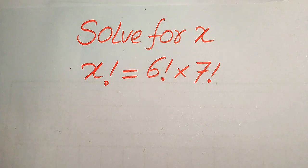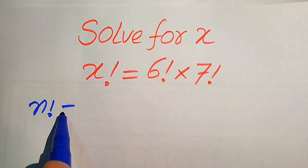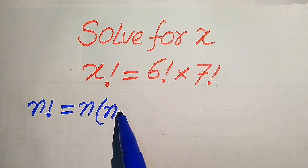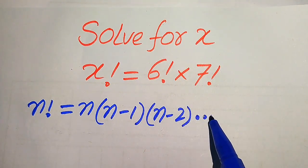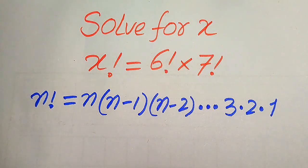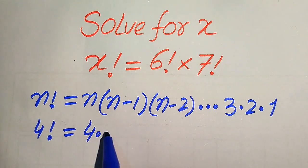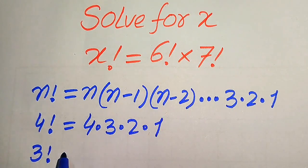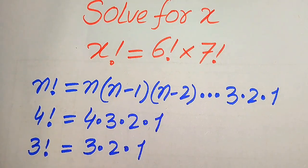First, I can explain a little bit about the term factorial. The n factorial means that we just multiply n times n minus 1 times n minus 2, and so on, times 3 times 2 times 1. For example, 4 factorial means 4 times 3 times 2 times 1, and 3 factorial is written as 3 times 2 times 1. This is the definition of factorial.